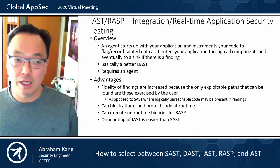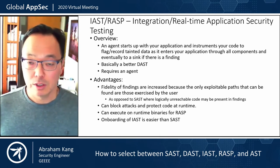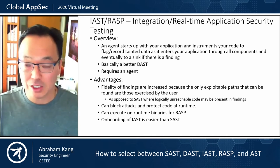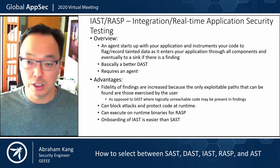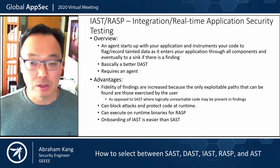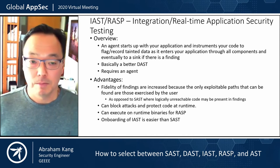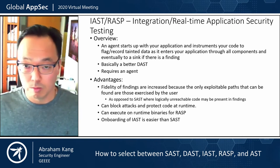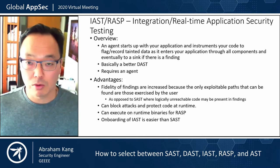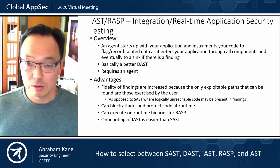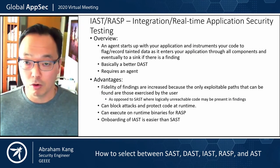If we talk about IAST and RASP, we basically have an agent that's going to instrument your code to watch input being passed into your application, trace it through to a sink, and report those vulnerabilities as findings. It's basically a better DAST because it has knowledge of your code, so it can avoid all the false positives that a DAST may report. From an advantages standpoint, there's going to be higher fidelity in terms of findings because you know that only the exploitable paths are going to be reported.